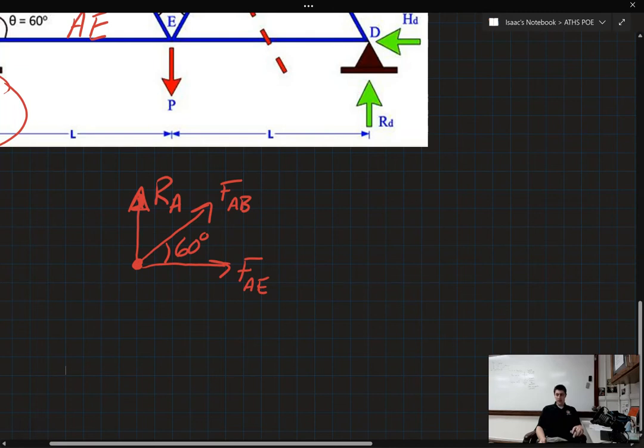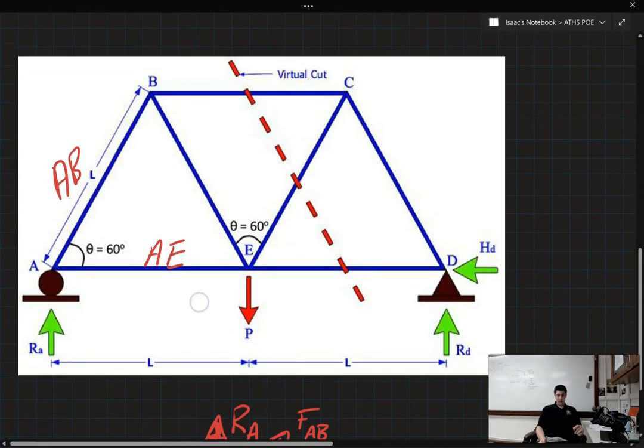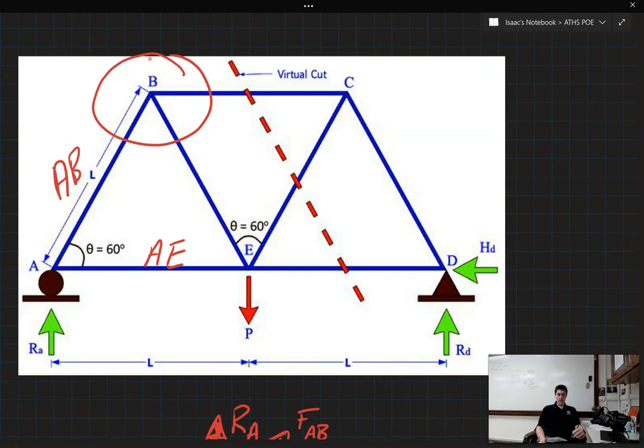So, let's move on to the next question, which is to draw a free body diagram of point B, which is up here. Now this one's a little bit easier to draw because we have three members and there aren't any pins or rollers there. And there's no outward applied force either.